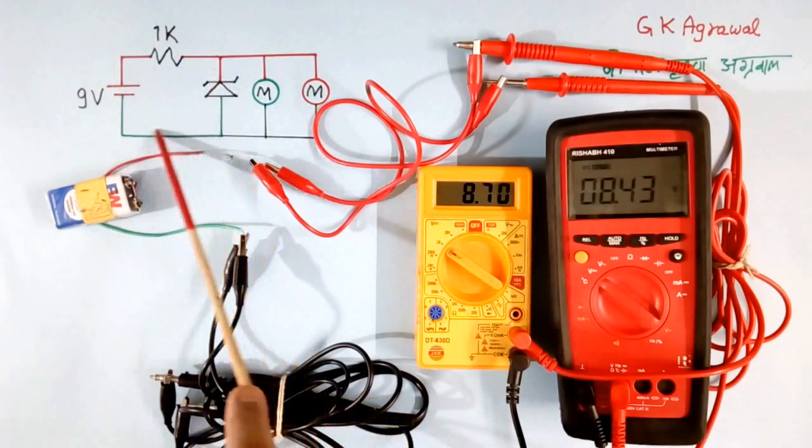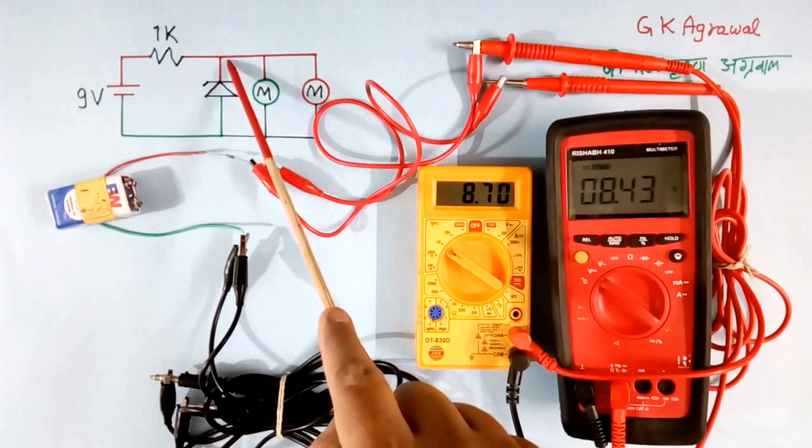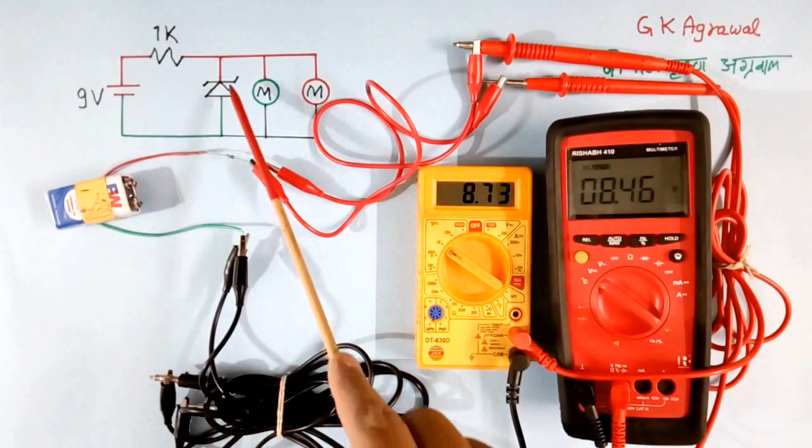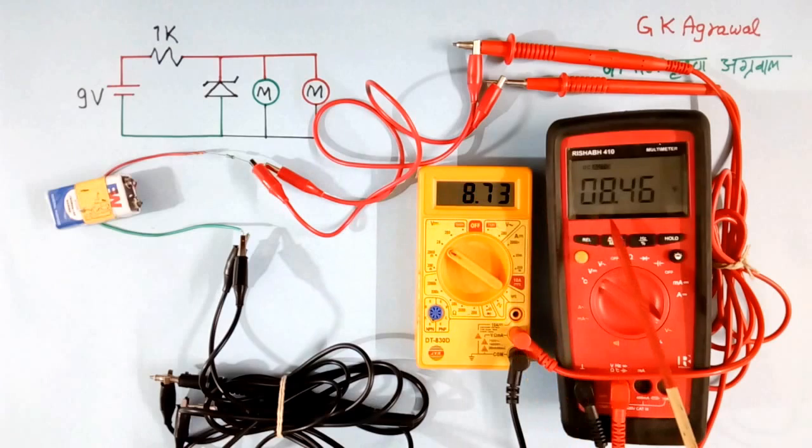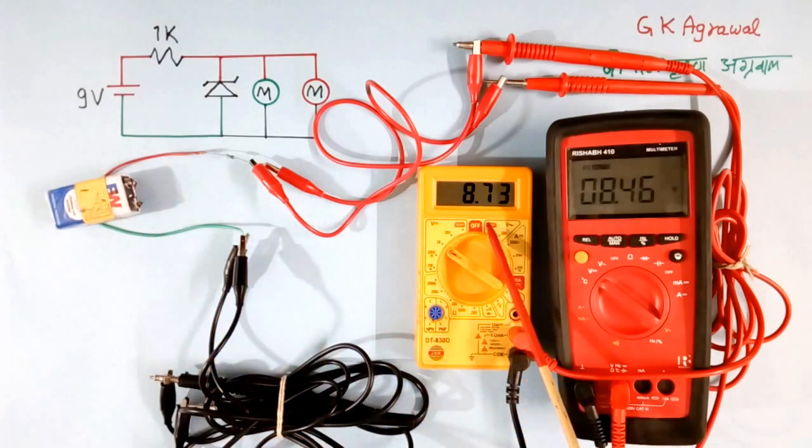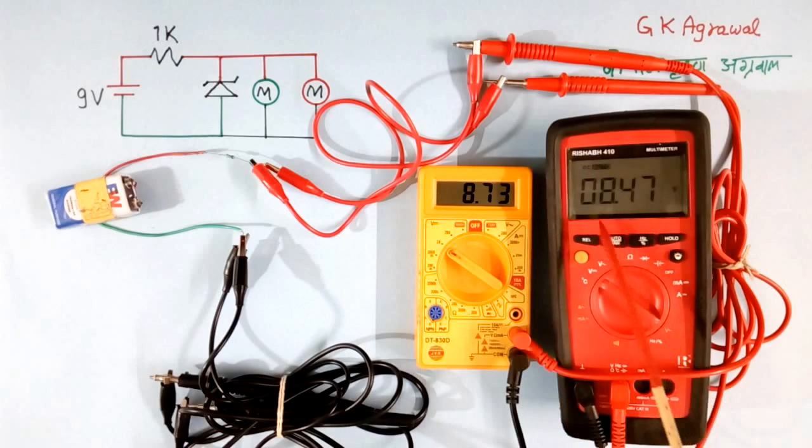Current will flow like this in this circuit. So this multimeter can read the voltage across this Zener diode. Here, because the Zener diode is not connected, these two multimeters are reading the voltage of this battery. This multimeter is reading 8.73V. This multimeter is reading 8.47V. Both are reading different values.